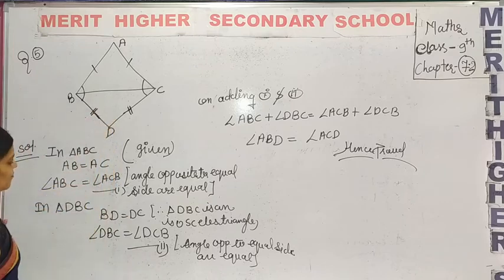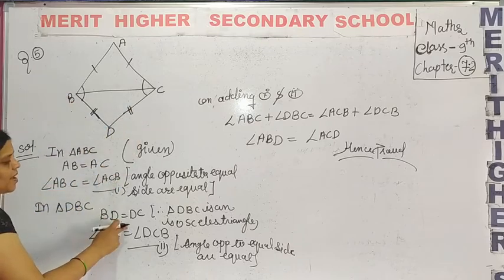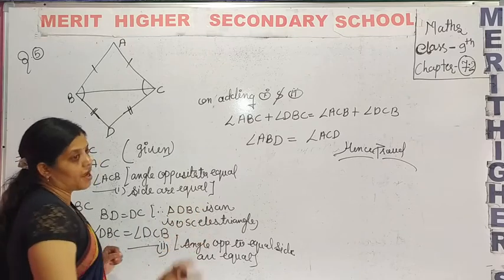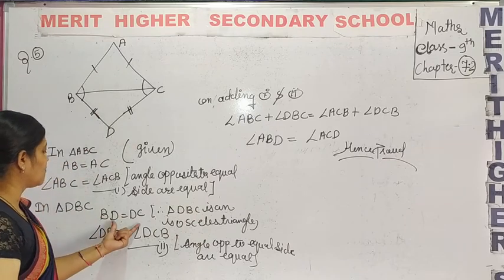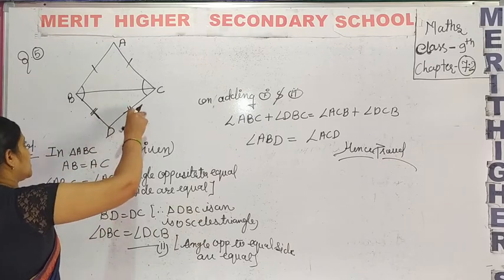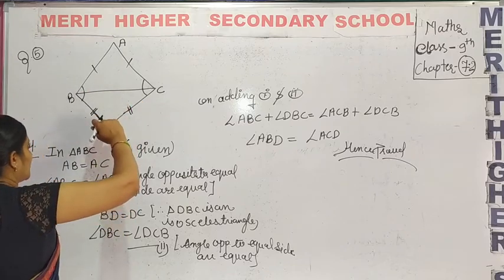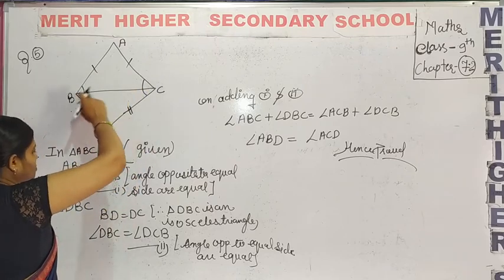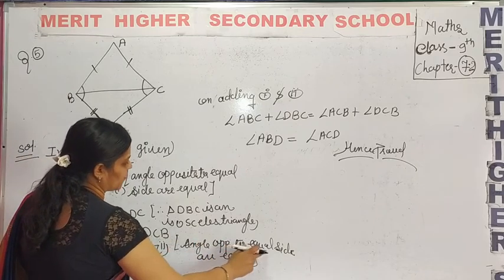Now, for the second triangle — triangle DBC is also an isosceles triangle. So BD equals DC. We need to find that BD equals DC. Since BD equals DC, the angles opposite to equal sides are equal: angle BDA is opposite to DC, and angle CDB is opposite to BD. This is a property. So we write this as equation one and equation two.